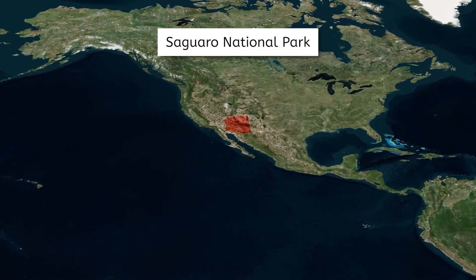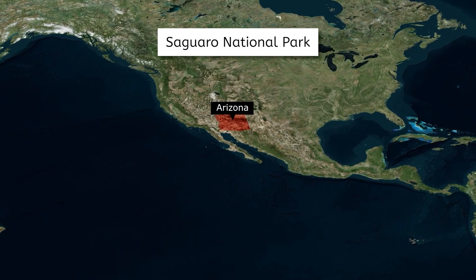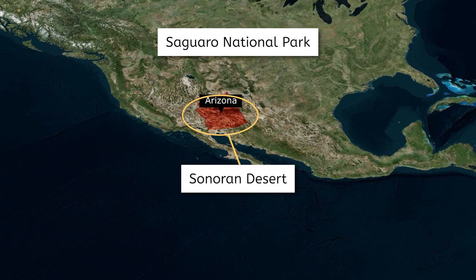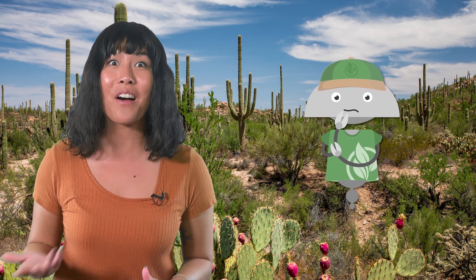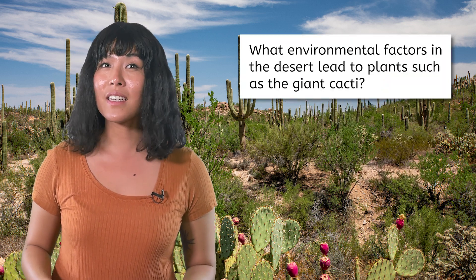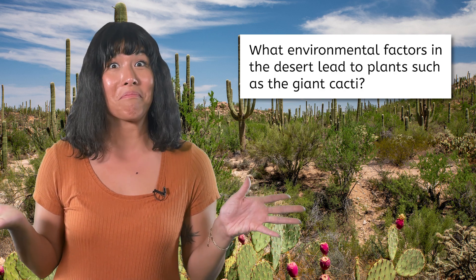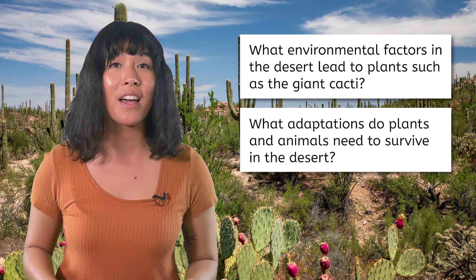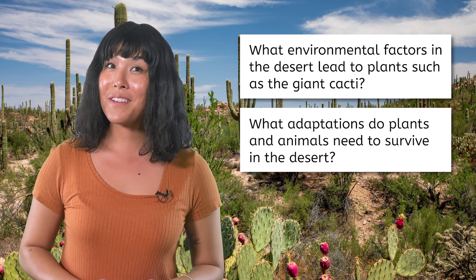To find Saguaro National Park, we had to travel to the American Southwest, specifically to the state of Arizona, which is located in a region known as the Sonoran Desert. As we've been exploring some of the park this morning, Mia was especially intrigued by the giant cacti everywhere. They are definitely very different from the types of plants we've seen in other biomes. Why do you think that is? What environmental factors here are likely to lead to plants such as giant cacti? What types of adaptations do you think plants and animals here will need to survive in these conditions? Pause the video and make some predictions!